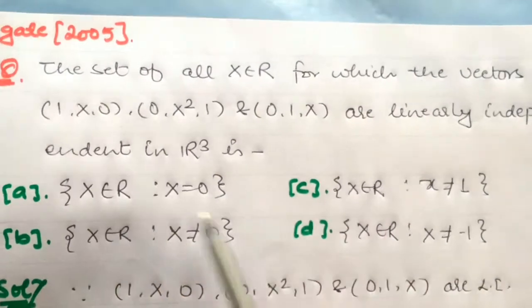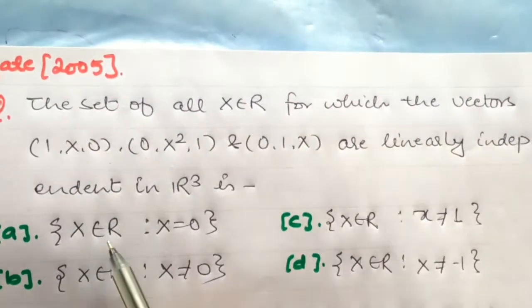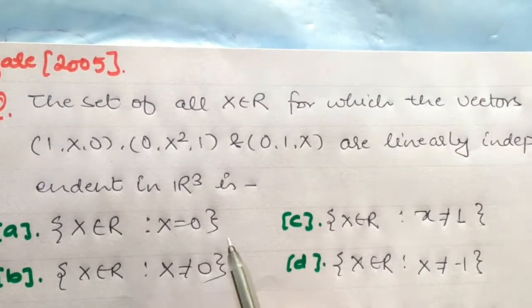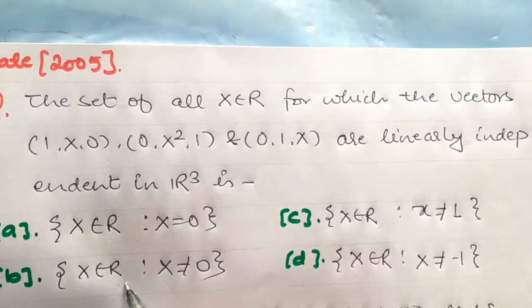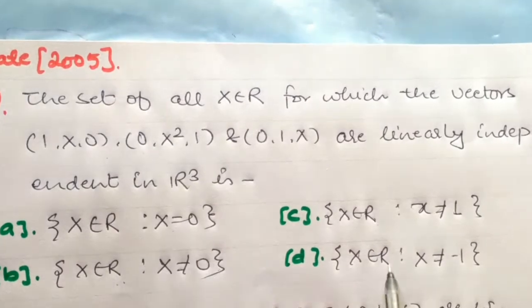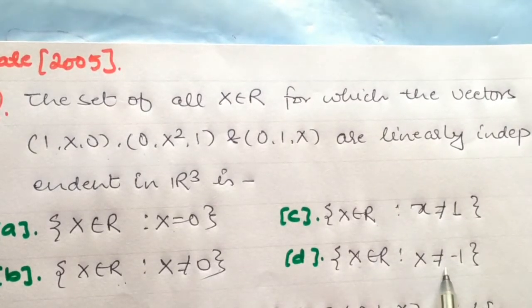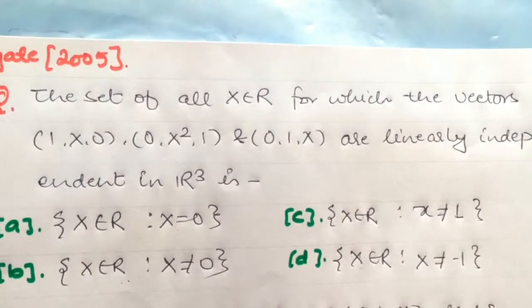There are four options: x belongs to R such that x ≠ 0; x belongs to R but x ≠ 1; x belongs to R but x ≠ 0 and x ≠ 1; x belongs to R but x ≠ -1. The question is very simple.